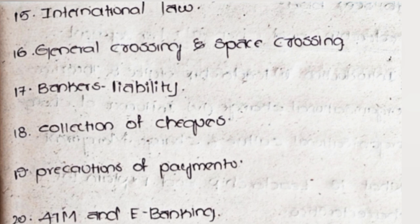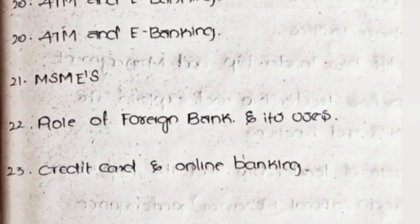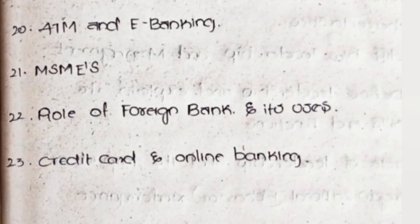Seventeenth, Banker's Liability. Eighteenth, Collection of Checks. Nineteenth, Precautions of Payments. Twentieth, ATM and E-Banking. Twenty-first, MSMEs. Twenty-second, Role of Foreign Bank and Its Uses or Advantages. Twenty-third, Credit Card and Online Banking.